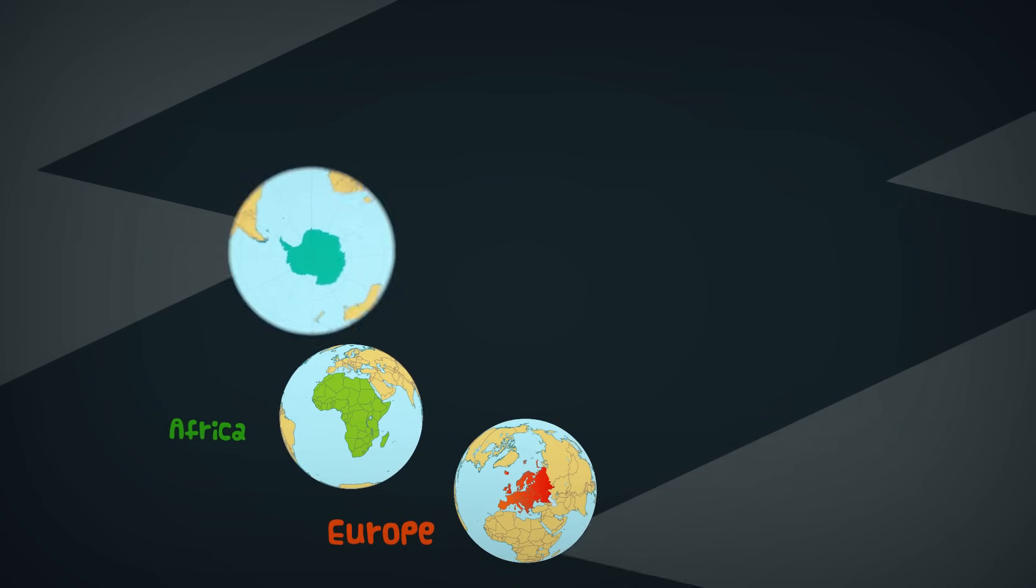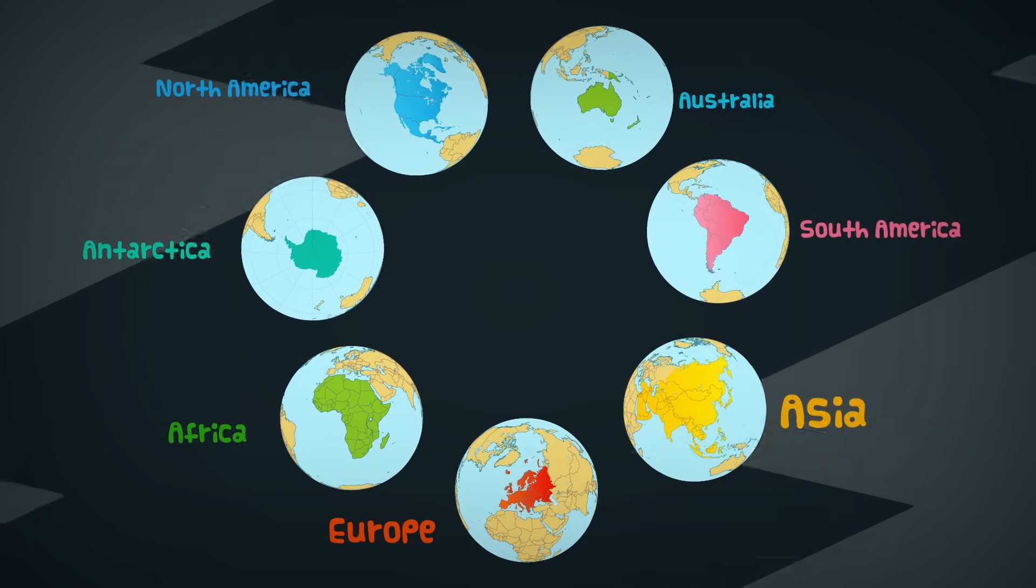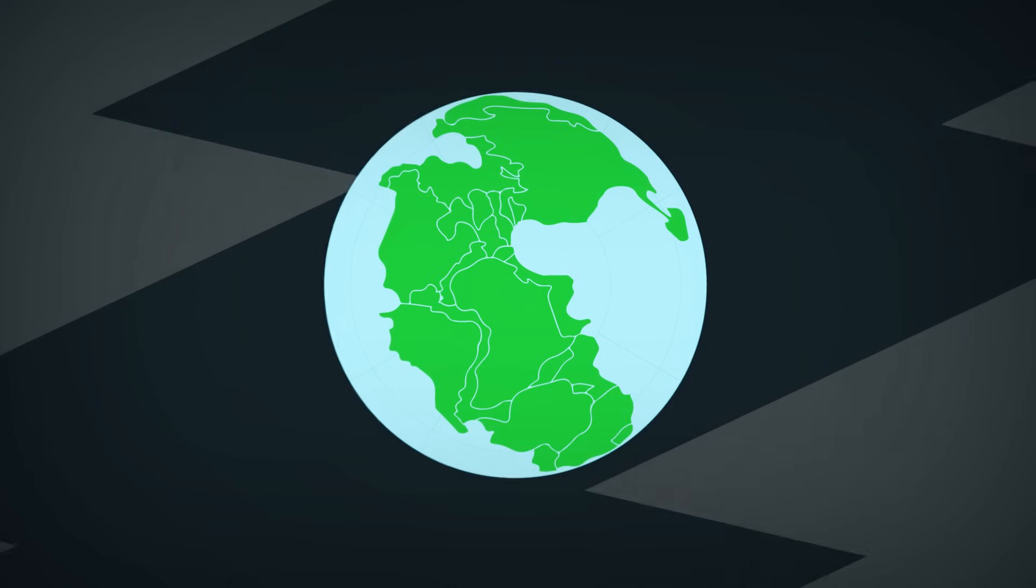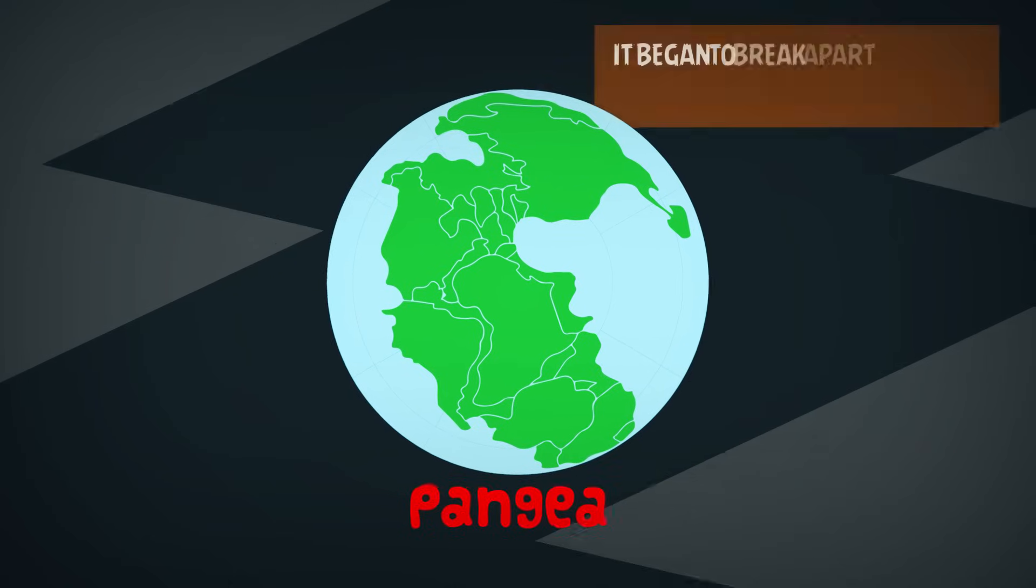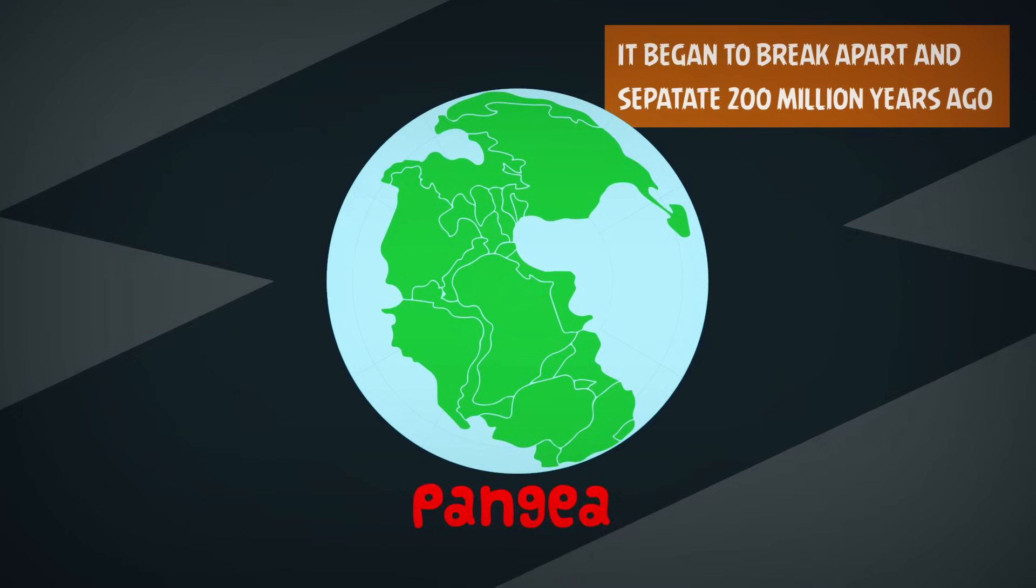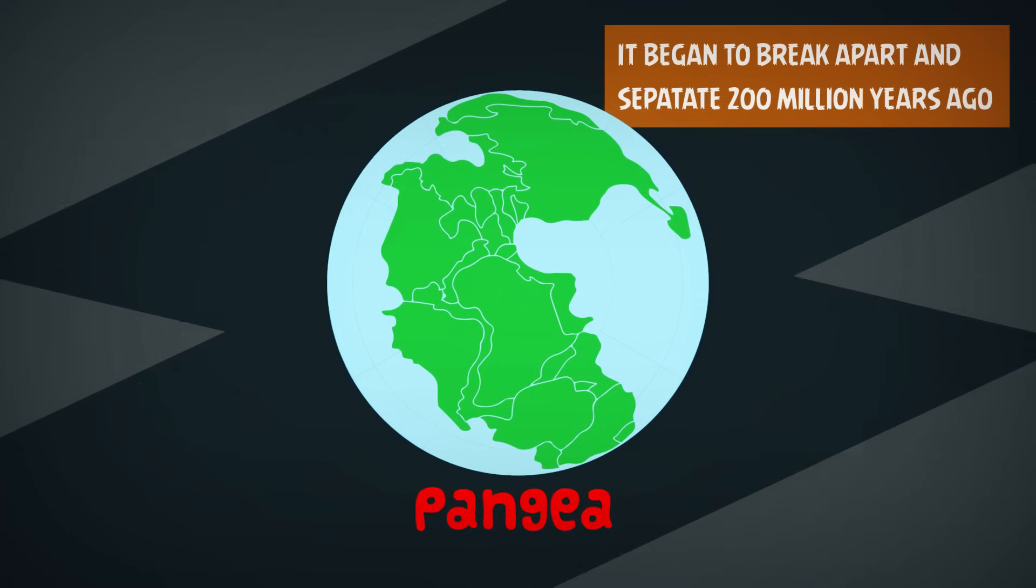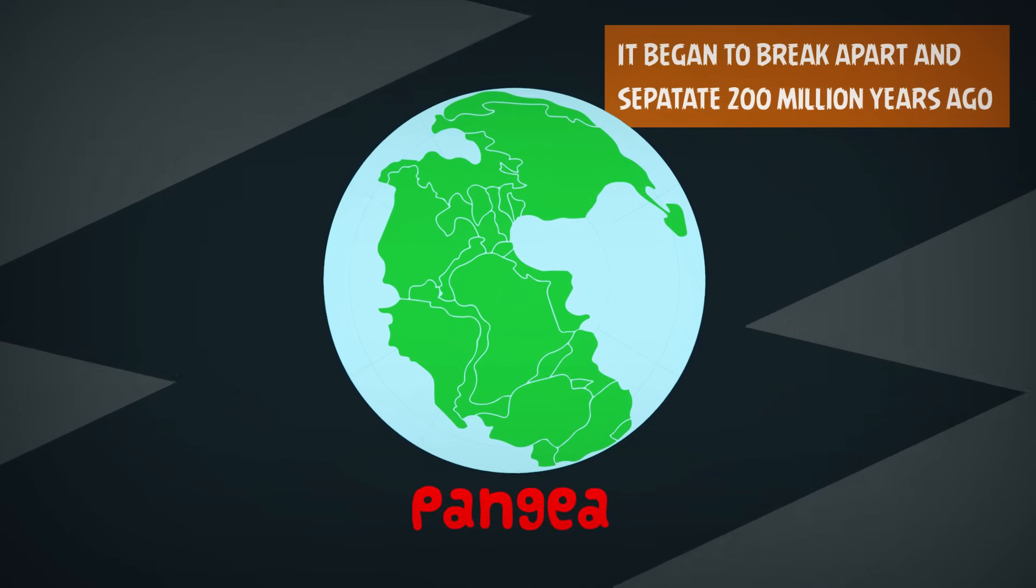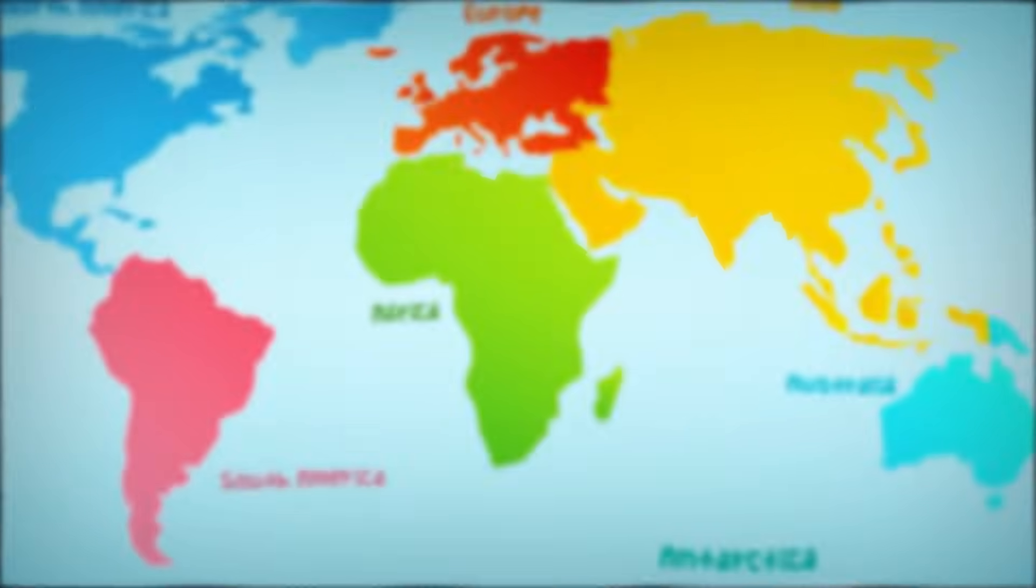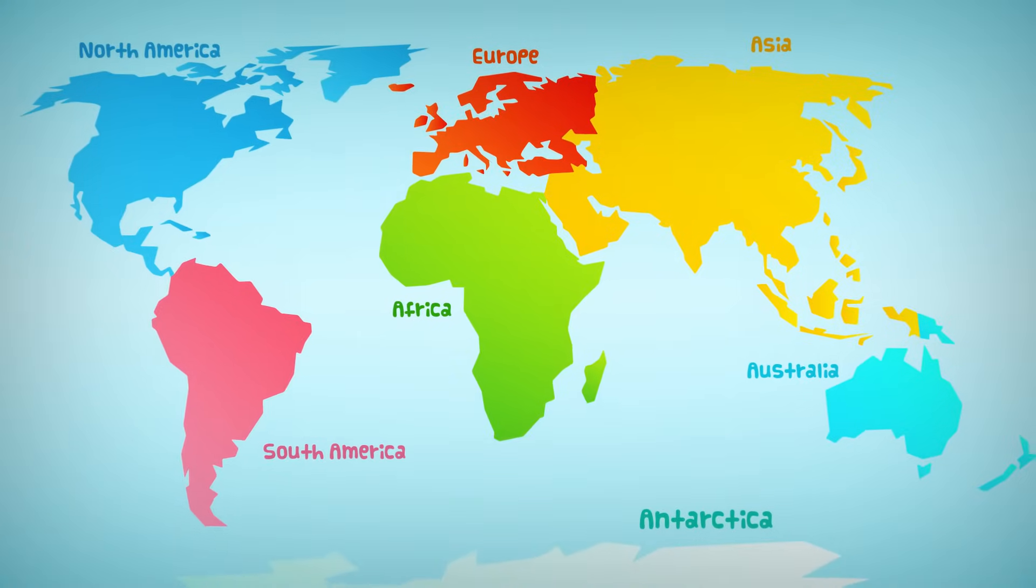All the continents on Earth used to be one large continent millions of years ago. It was called Pangaea and it began to break apart and separate 200 million years ago. And that's how all our continents have been formed.